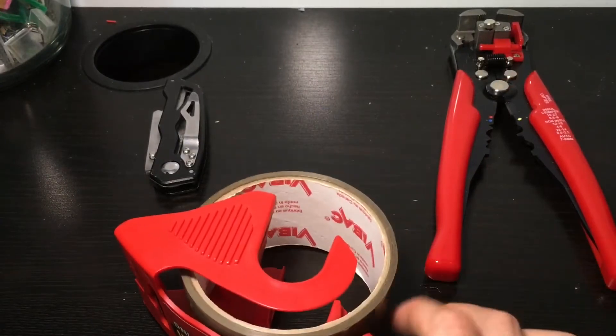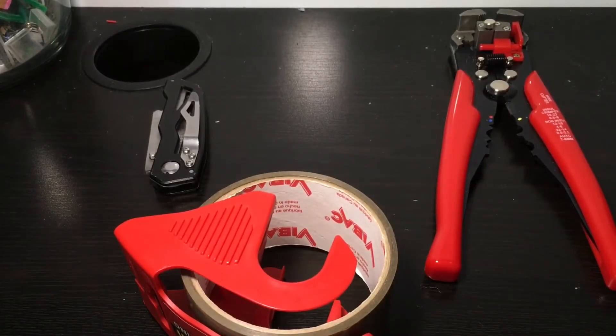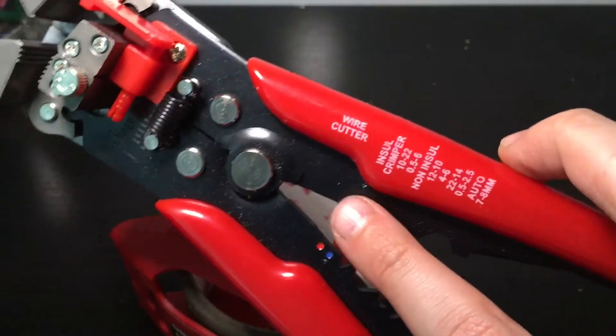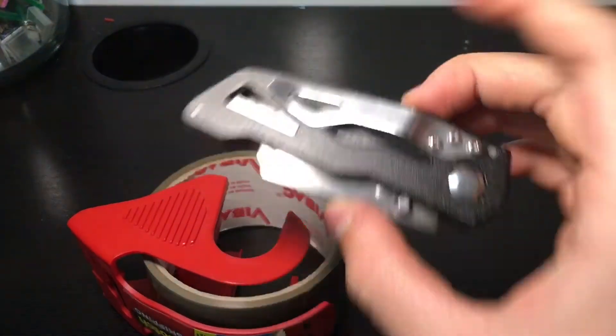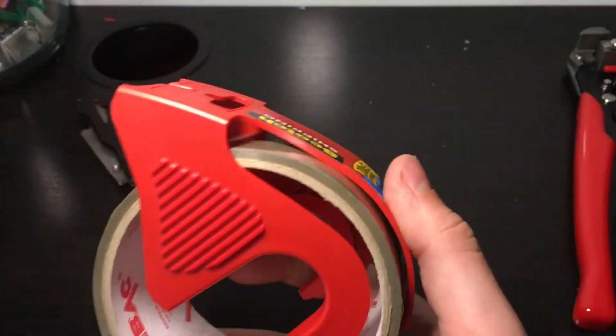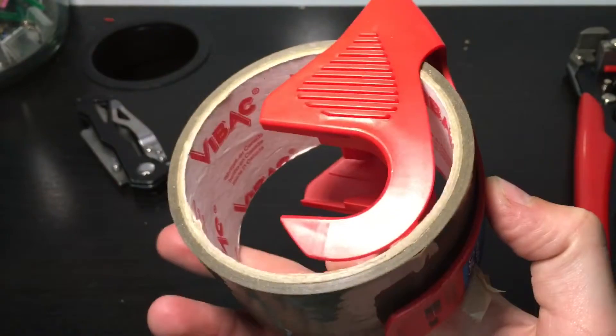Here are all the supplies you're going to need for step one. You're going to need your wire strippers and cutters, your razor blades, and some tape. Any kind of tape will work fine, I'm just using some packing tape because that's what I could find.